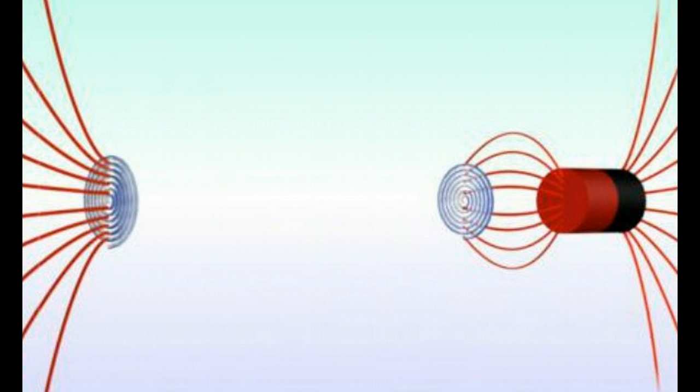And what they've done is they've used this tiny magnetic wormhole to connect two regions of space so that this magnetic field can travel invisibly between them.